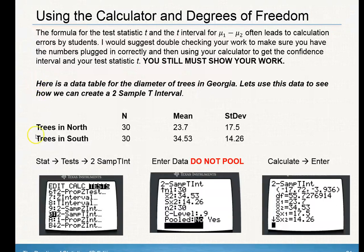Let's take a look at this example. Here is a data table for the diameter of trees in Georgia. Let's use this data to see how we can create a two-sample t interval. Here are our sample sizes, the mean for each sample size, and the standard deviation. Notice two different populations — north and south trees.